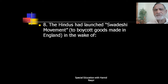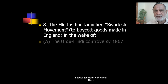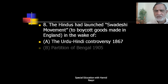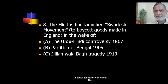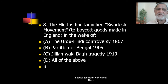Next question: the Hindus had launched the Swadeshi movement to boycott goods made in England in the wake of — the Urdu-Hindi controversy 1867; Partition of Bengal 1905; Jallianwala Bagh tragedy 1919; or all of the above. The answer is B — Partition of Bengal 1905.